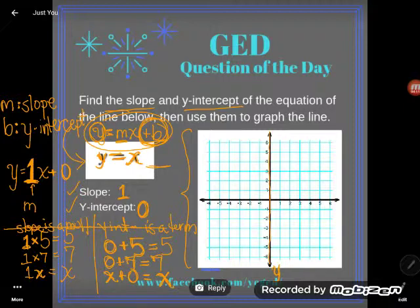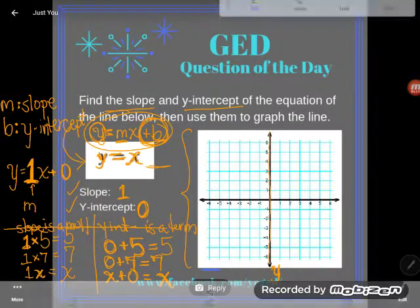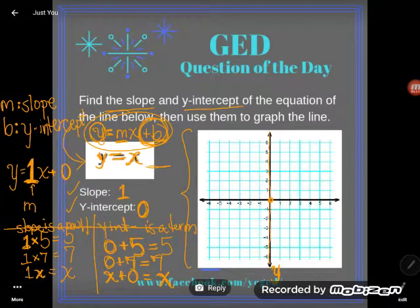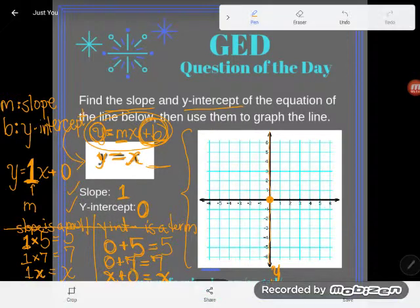So the y-intercept is where my line crosses the y-axis. The y-axis is the one that goes up and down, the vertical line here. So I'm crossing at zero, so I'm going to put a dot right there on the origin at zero.